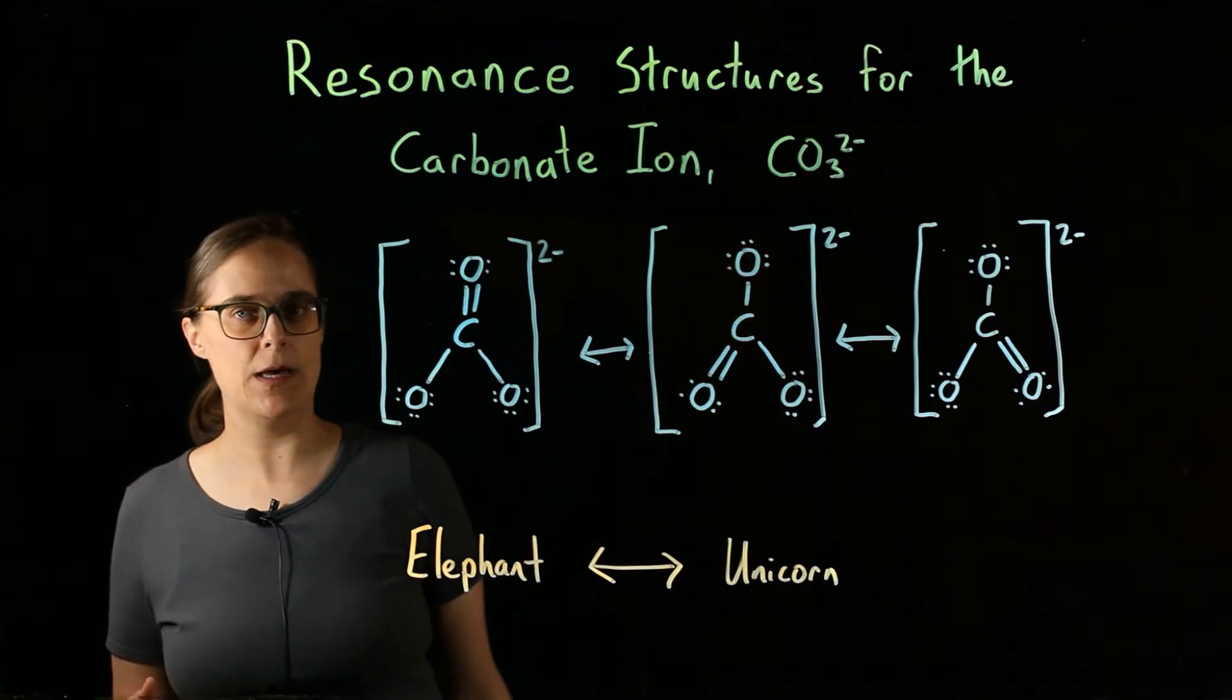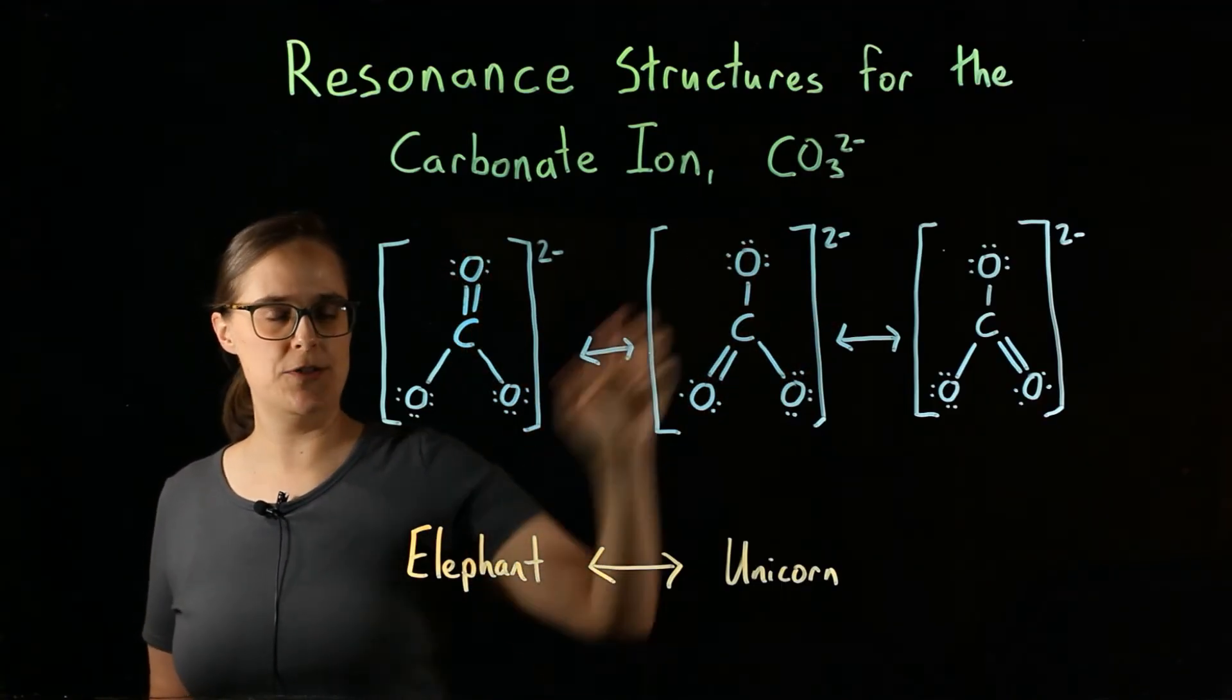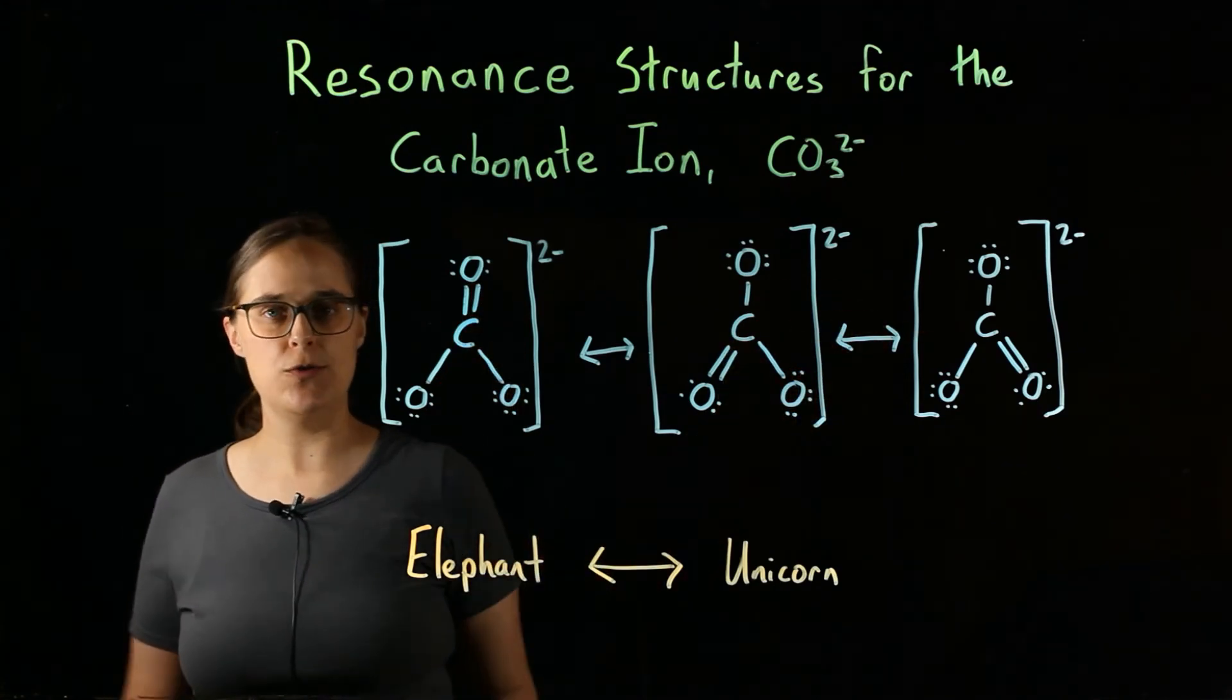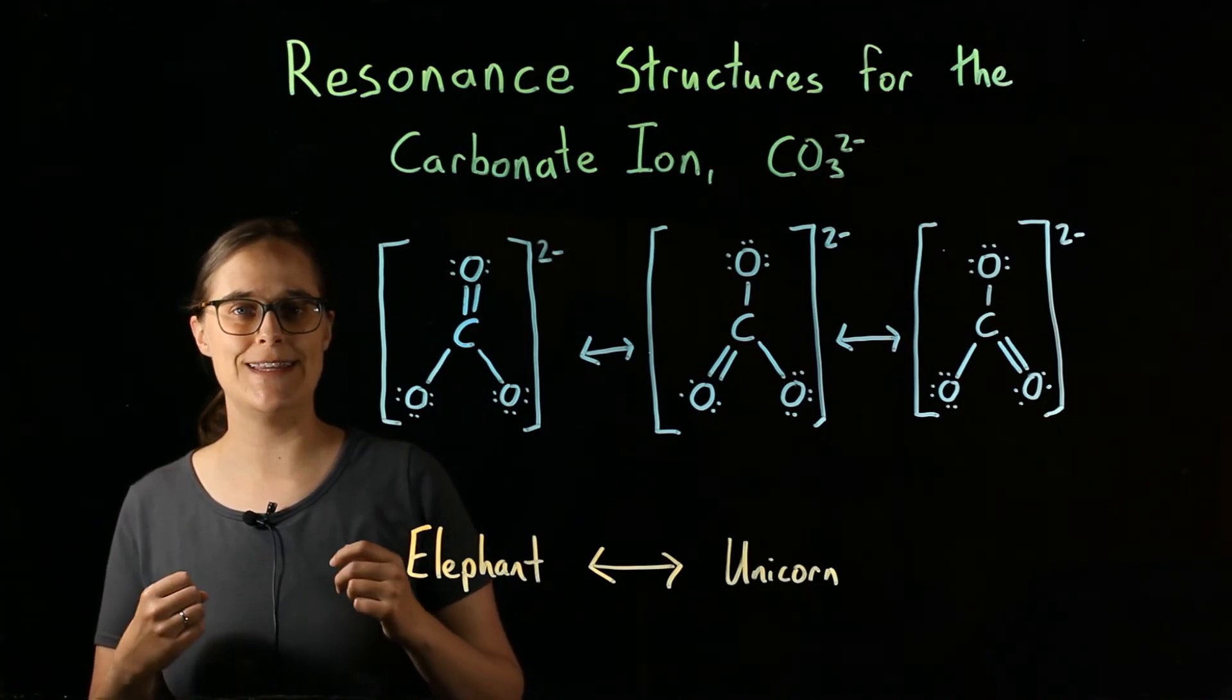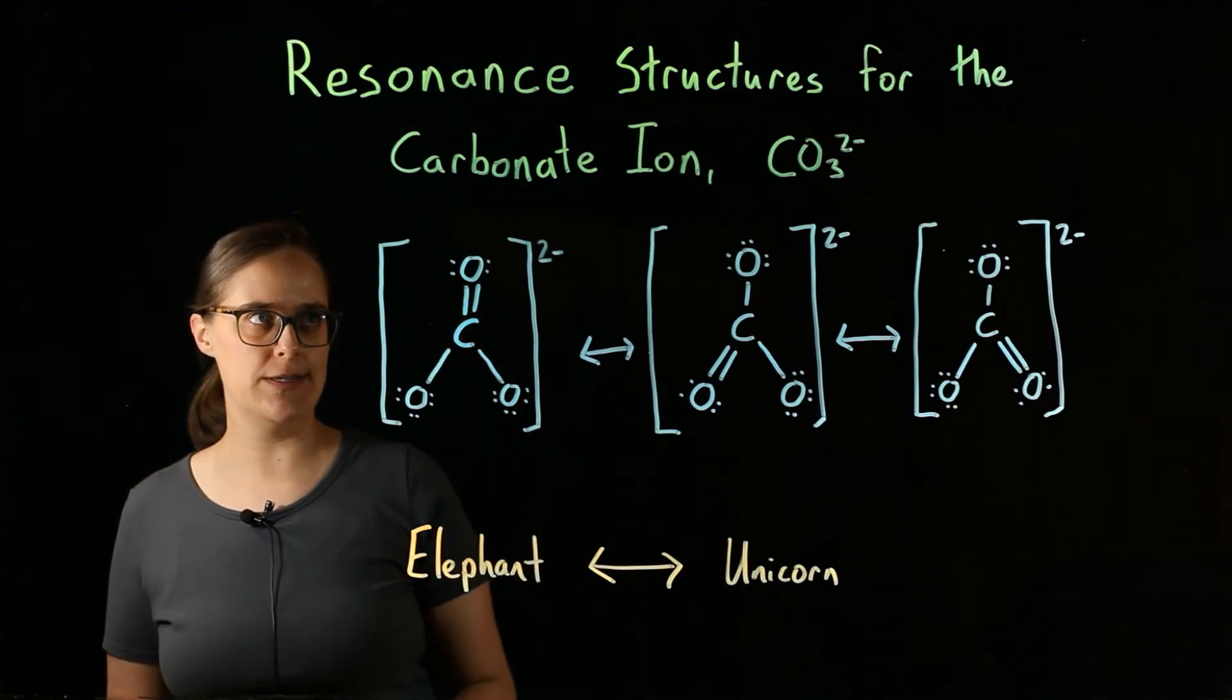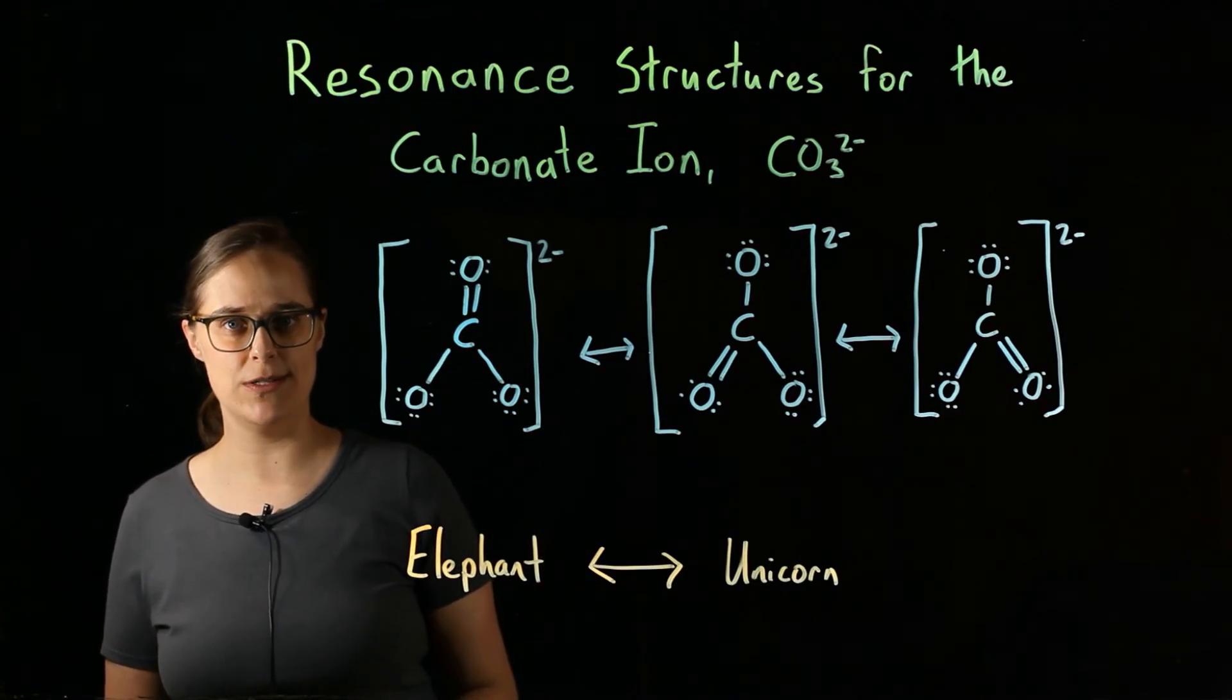I can say the same thing about resonance structures. If I take a bunch of still images of a carbonate ion, none of them are ever going to look like one single resonance structure. They are all going to look like the average of these structures. These carbon-oxygen bonds, in the case of the carbonate ion, should be one and one-third bonds.